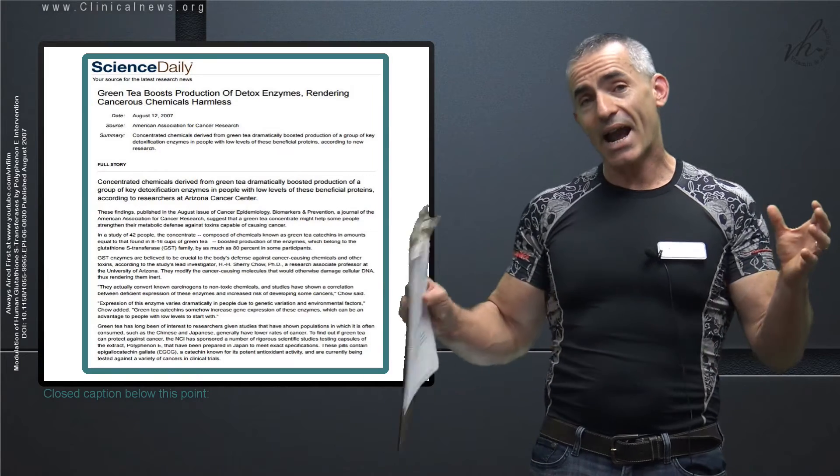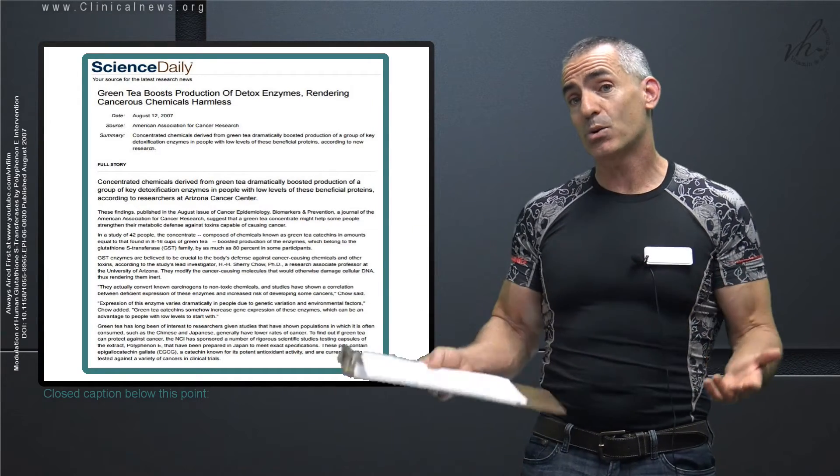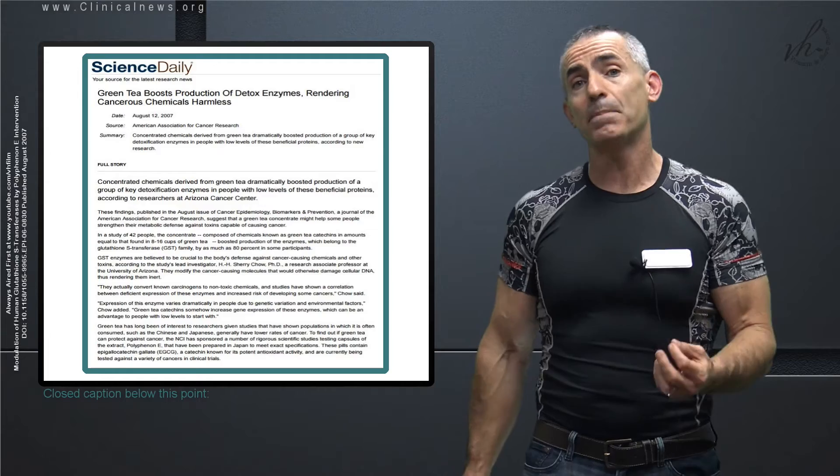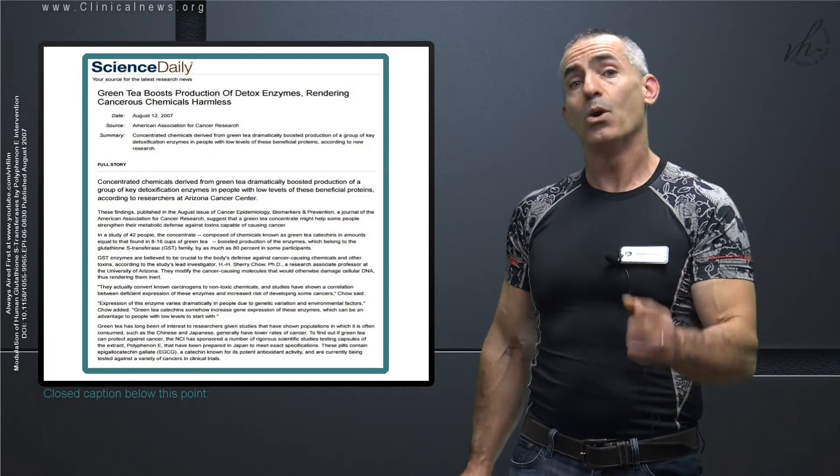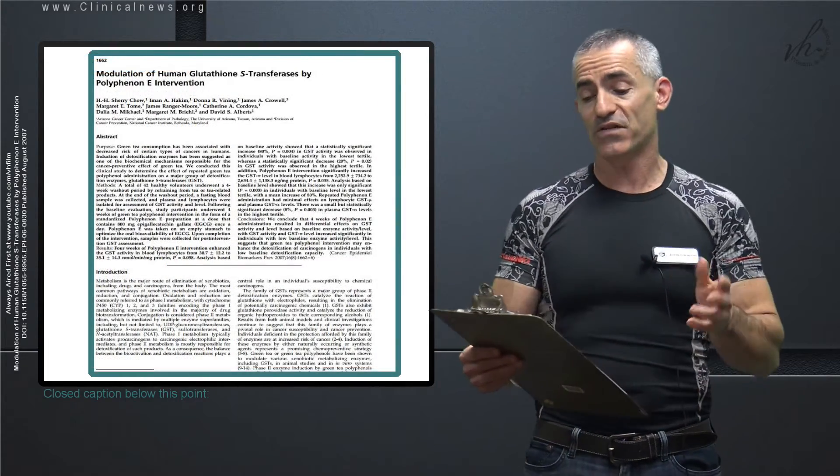Now keep in mind, the active components of green tea that they used would be about the equivalent of drinking about 8 to 16 cups of green tea per day. With that in mind, let's go right into the study parameters as follows.